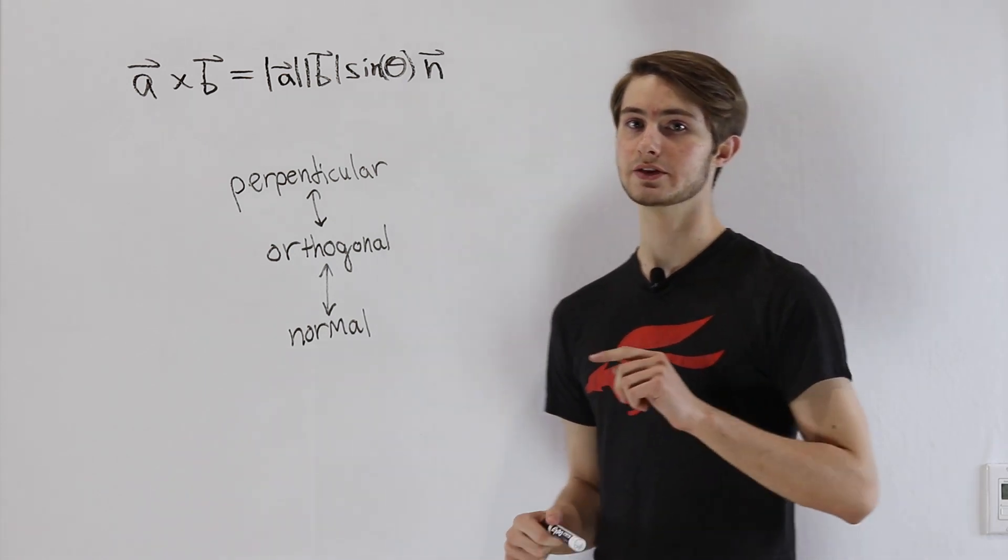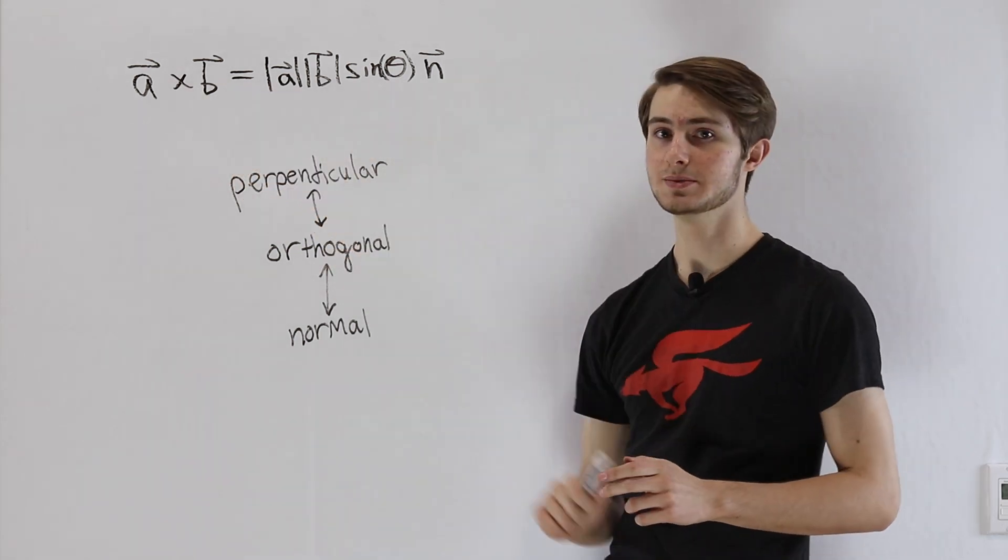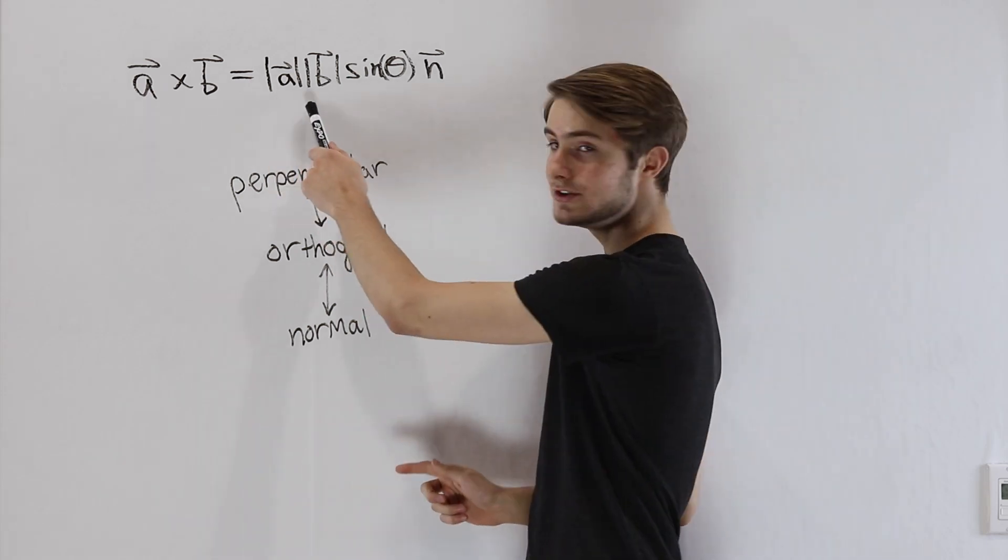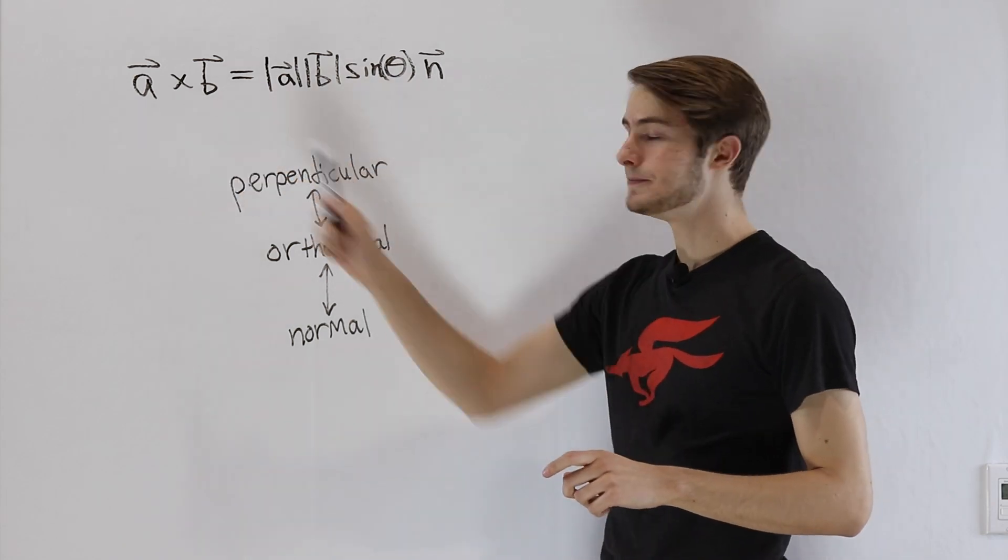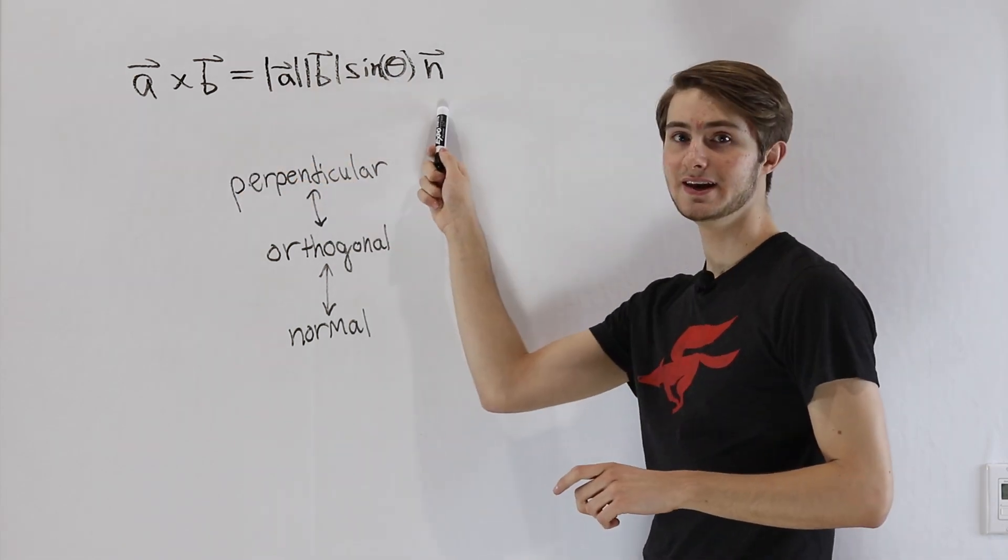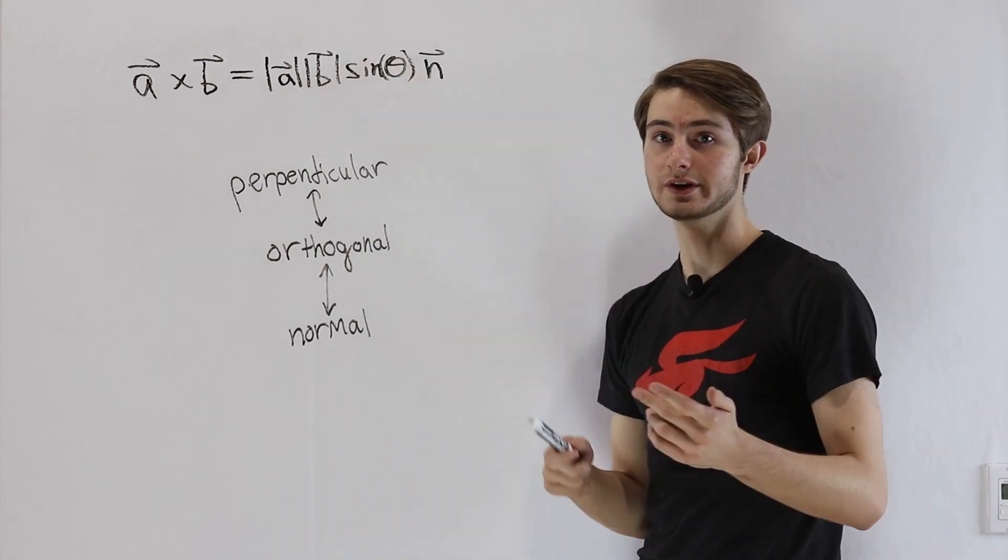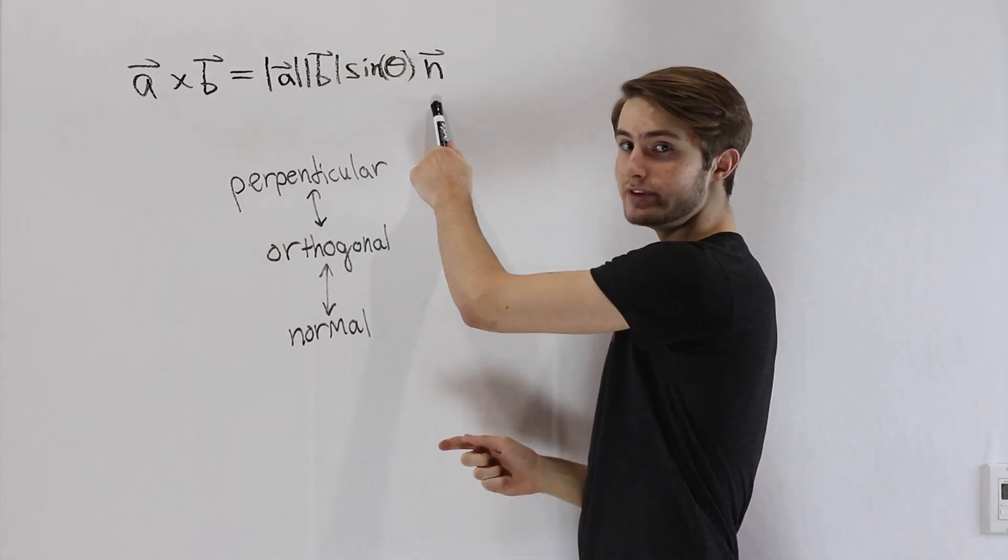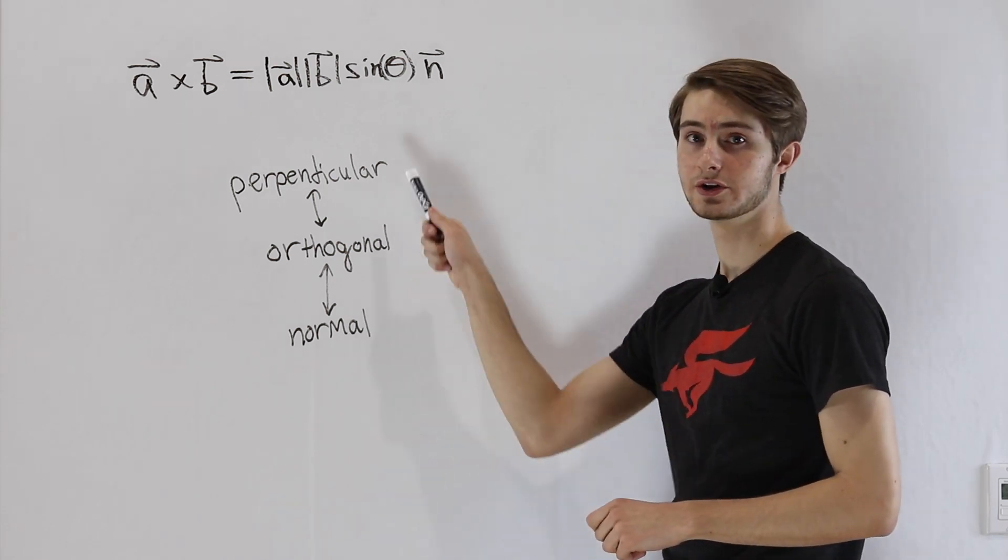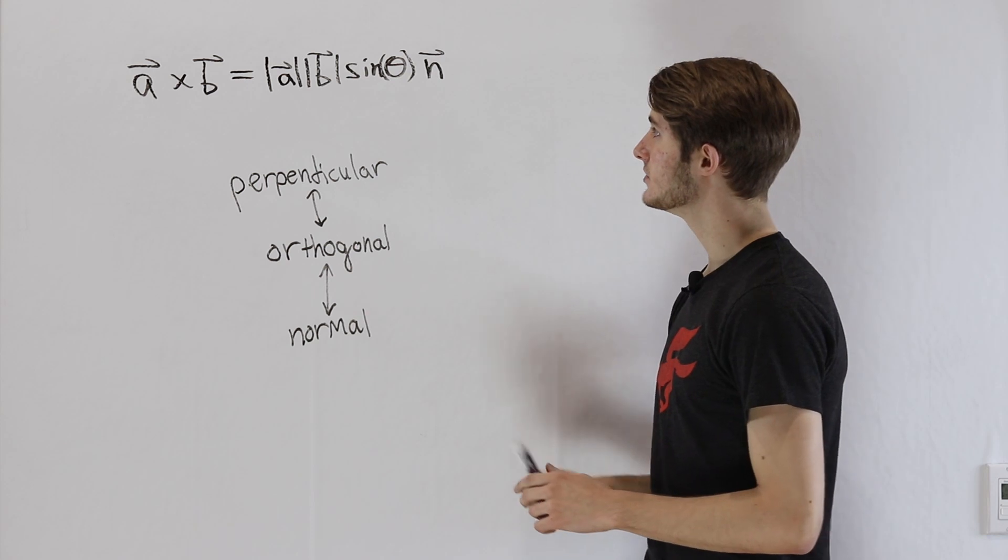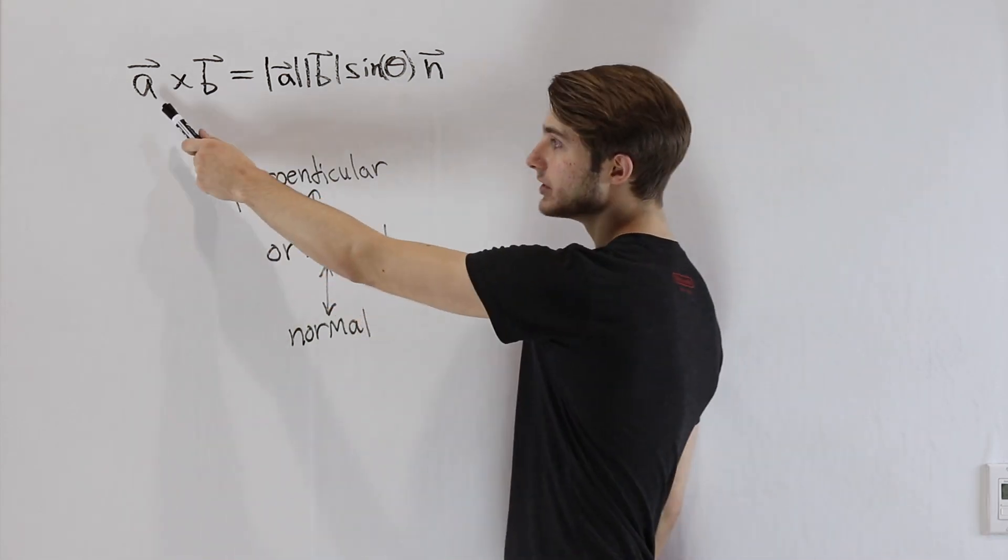And that is why the cross product is useful. If we take a vector a and cross it with the vector b, we get the magnitude of a times the magnitude of b times the sine of the angle between them and then times n. Remember this whole part is going to be a scalar, just a number. This n here is a vector and that n stands for normal. Normal means the same thing as orthogonal and perpendicular. It means that we are going to get a vector at a 90 degree angle to both of our inputs.